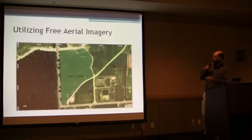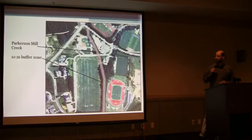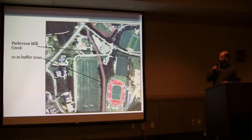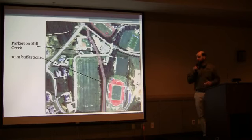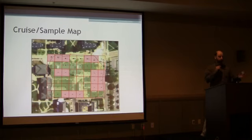This is an example of the type of imagery we utilize in our workshops, which is freely available to you. It's hosted on our ACES Water Quality website and will soon be available through our web utility. Here's another quick example — if you're interested in developing buffer zones around your property, this is a 10-meter buffer zone around a creek in Auburn on campus. We also have a cruise or sample map that we can develop with the software we're using.